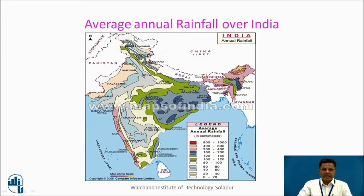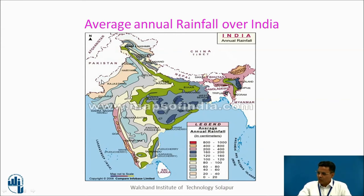Based on this data, the average annual rainfall over India is mapped. Rainfall varies from 0 to 20 centimeters per year in parts of Rajasthan up to 800 to 1,000 centimeters in Meghalaya. In Maharashtra, some regions receive 40 to 60 centimeters; moving east, it is 60 to 80 centimeters; and in Konkan, it is between 200 to 400 centimeters.